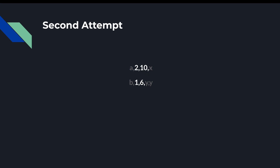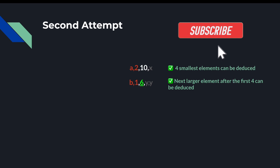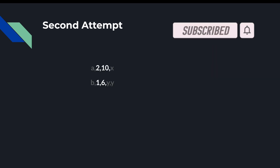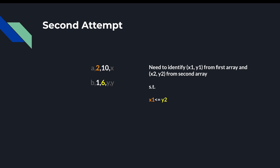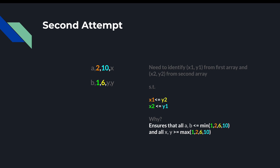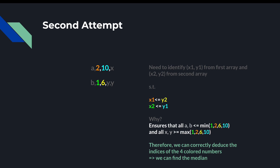So this is the minimum set of information we need to determine the median. We can deduce the four smallest elements, those marked in red, and we can also deduce the next element that's larger than those smallest elements. So in our binary search, we need to identify two pairs of numbers — x1, y1 from the first array, and x2, y2 from the second array — such that x1 is less than or equal to y2, and x2 is less than or equal to y1. By finding two pairs of numbers that satisfy this condition, we ensure that all numbers to the left are less than or equal to the minimum of the guessed numbers, and all numbers to the right are at least as large as the maximum of the guessed numbers. By doing so, we can correctly deduce the indices of the four colored numbers, meaning that we can find the median.